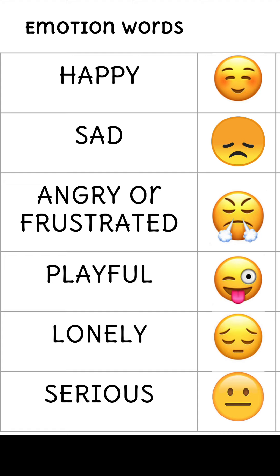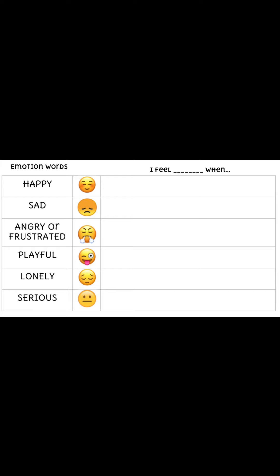Emotion words: Happy, Sad, Angry or frustrated, Playful, Lonely, Serious. Take a look at this chart and think about things that make you feel happy, things that make you feel sad, what makes you feel angry or frustrated, how about playful, lonely, or serious. You're going to write down words or things that make you feel those ways.